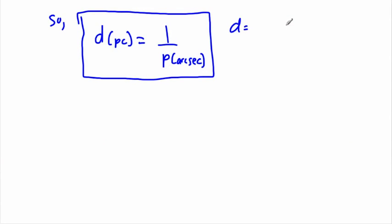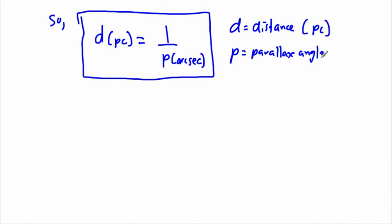To be careful: d is the distance measured in parsecs, and p is the parallax angle measured in arc seconds. In the next video I'm going to define the parsec and the arc second and show how everything comes together.